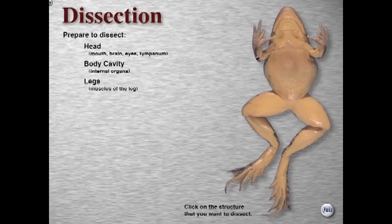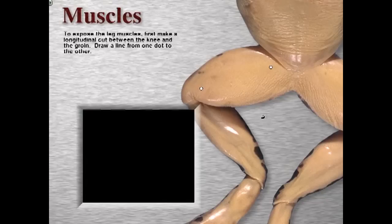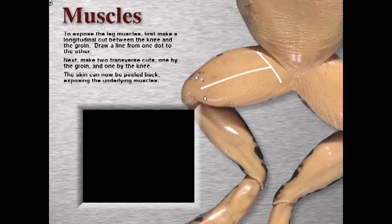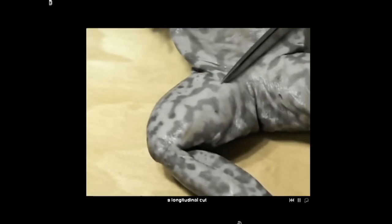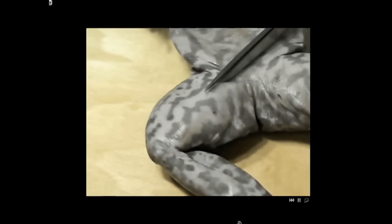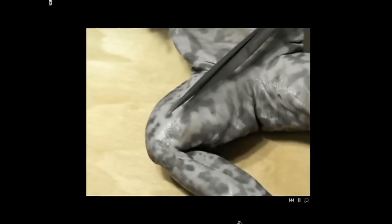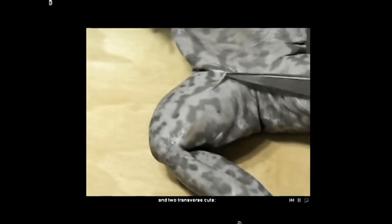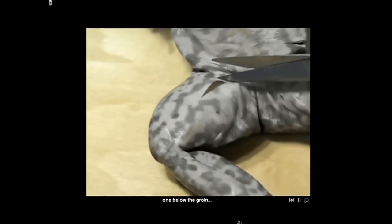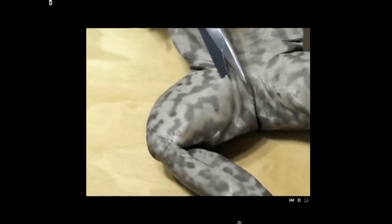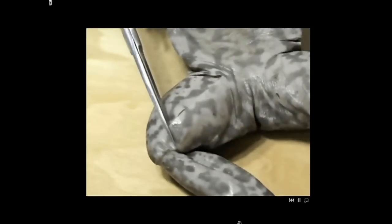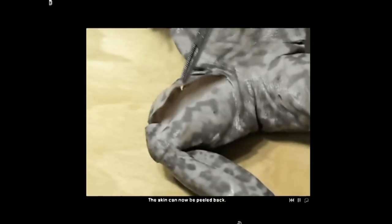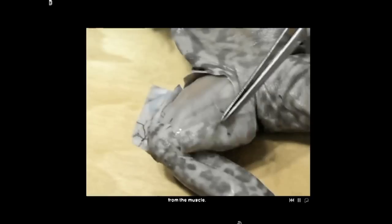So now let's start dissecting. We could begin with the head, the body cavity, or the legs — let's do the legs. The instructions tell us to connect the dots, and if we do it well enough, a movie will play down here. The skin on the thigh is removed by making three cuts: a longitudinal cut from the groin to the knee, and two transverse cuts — one below the groin and the other above the knee. The skin can now be peeled back. Notice how easily it comes away from the muscle.